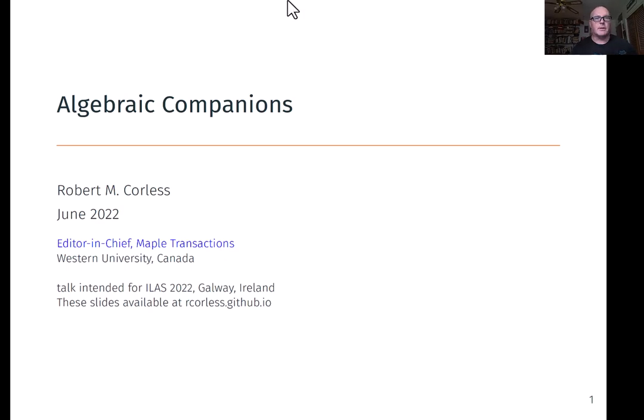Hi, my name is Rob Corliss and I'm going to be talking today about algebraic companions. This talk is intended for the International Linear Algebra Society meeting in Galway, Ireland. The slides are available at my website www.arbcorliss.github.io, and they include links to various papers, so you might actually want them.